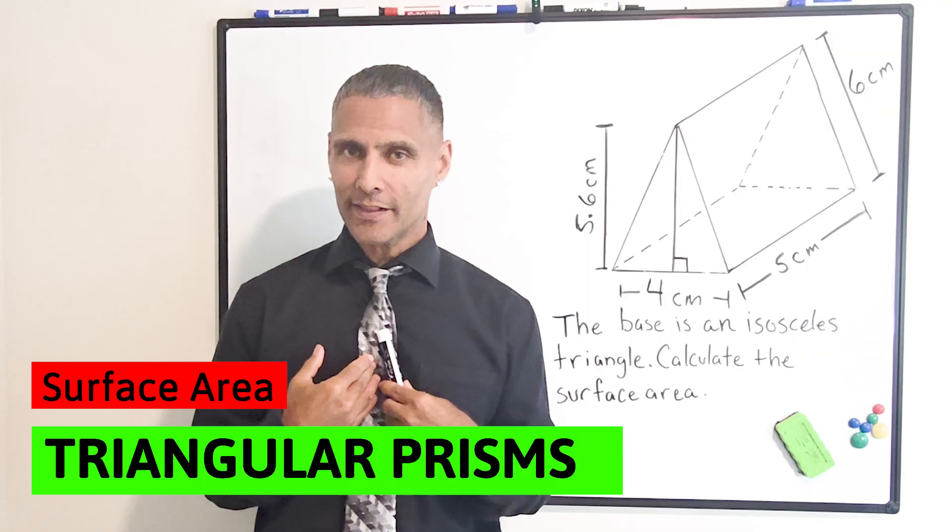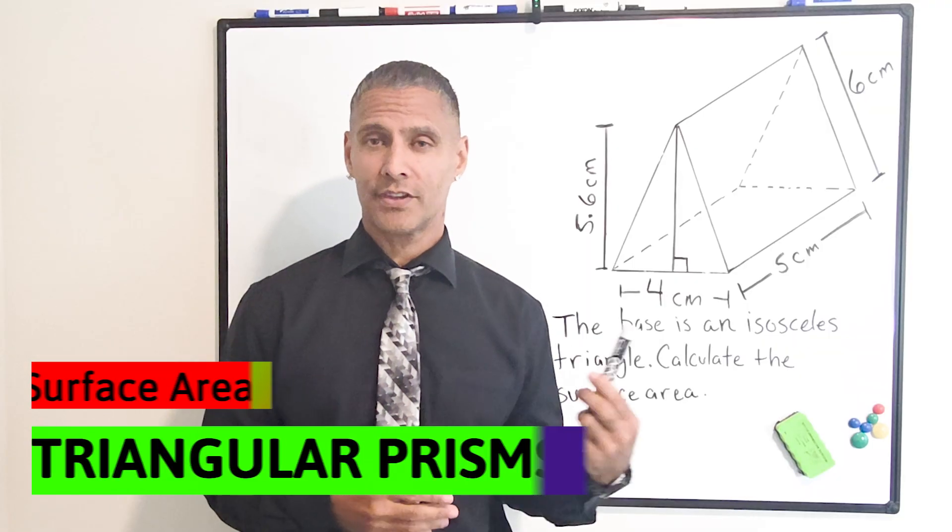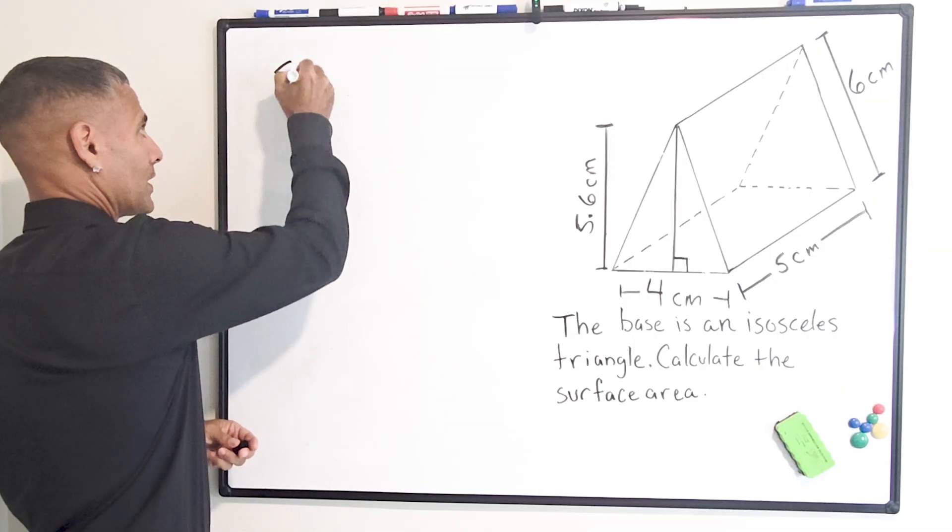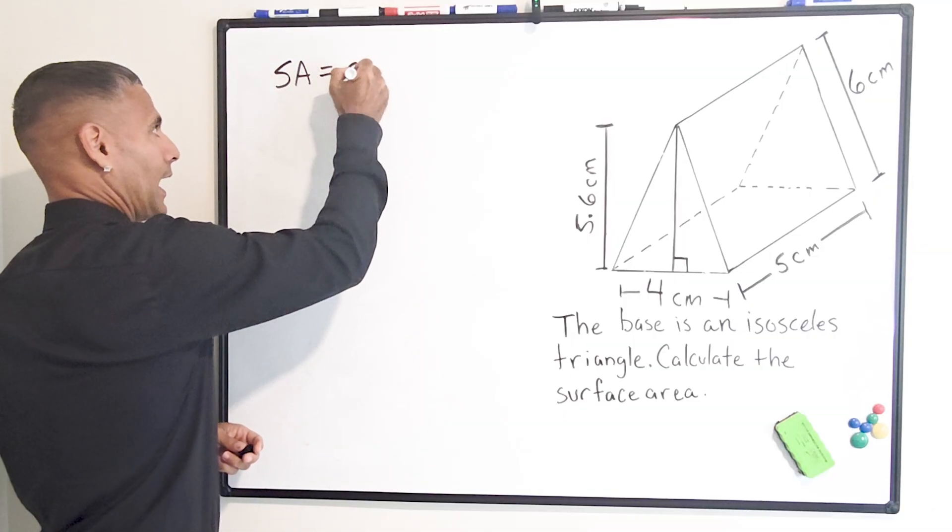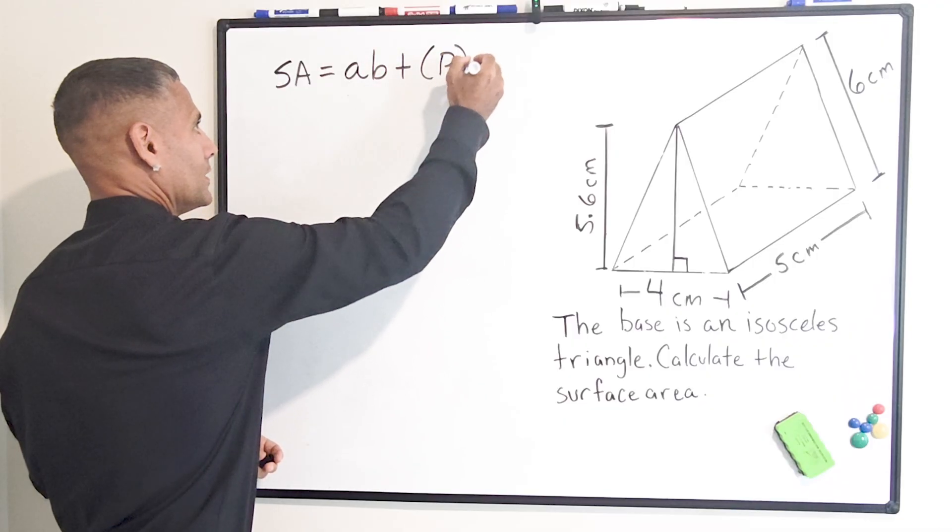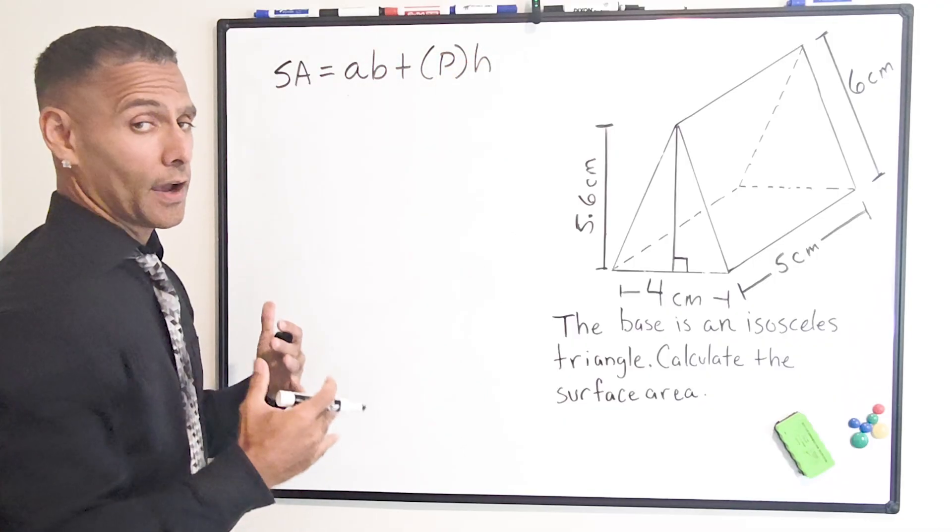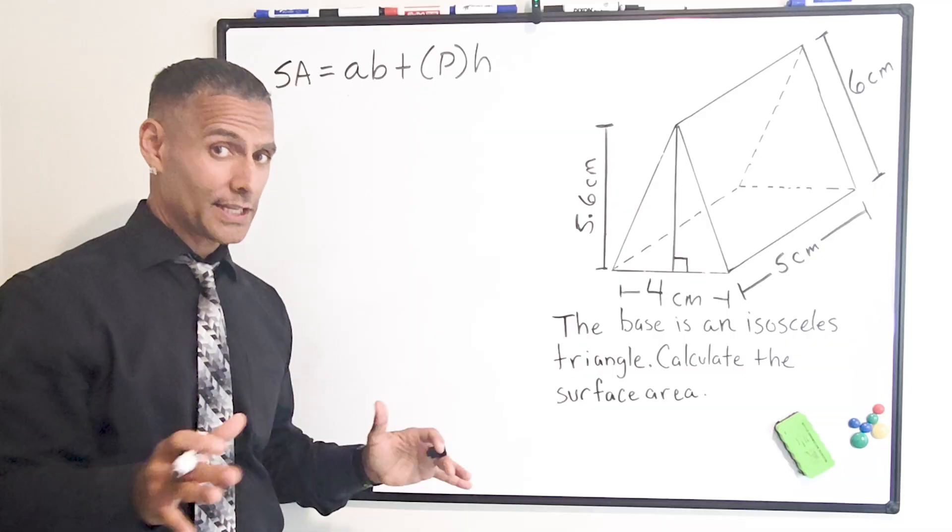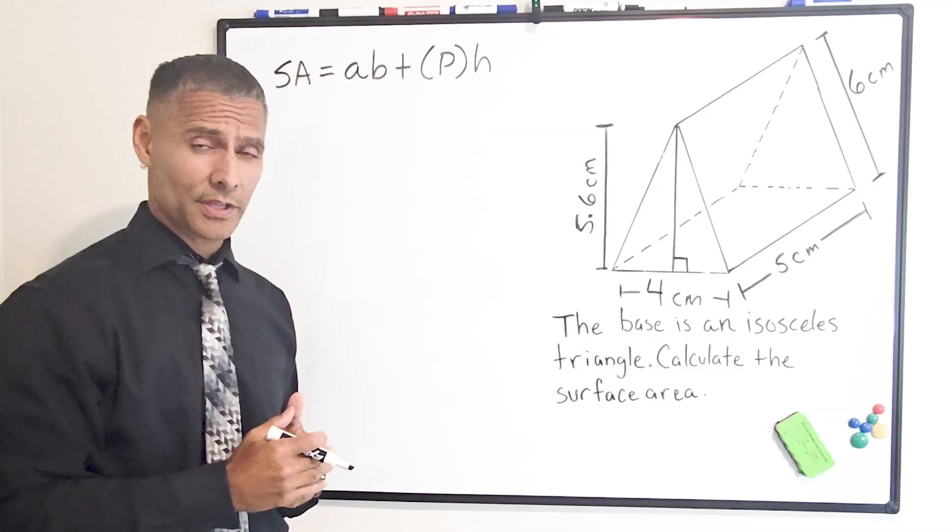Now, the formula that I like to use to calculate the surface area of this object is surface area is equal to A times B plus capital P times H. Now, you may see this formula expressed many different ways, but this is the way that I like to write my formula.